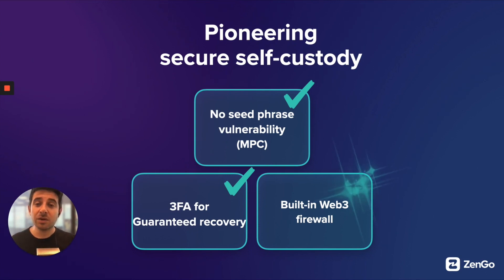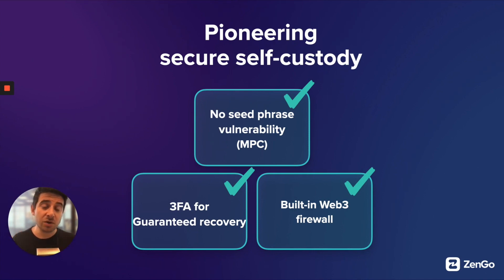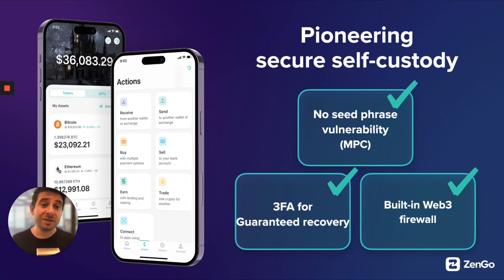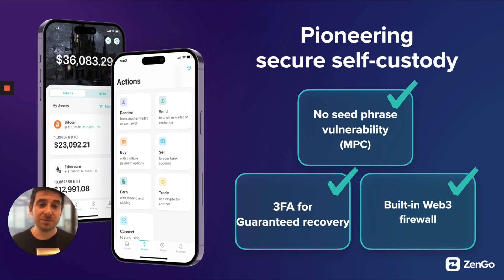When we look at all three together, we see the full pyramid of secure self-custody: no seed phrase vulnerability because of MPC; three-factor authentication to recover your assets if your phone gets lost or stolen; and transactional security on a daily basis with a built-in Web3 firewall. That is the Zengo model — something that is secure by default. We hope this was helpful in learning about our security infrastructure. If you have questions, go to zengo.com/security. We also have live 24/7 in-app support — after downloading Zengo, tap the headset icon in the top right of the screen and we'll respond within minutes. Thank you so much, and feel free to share any questions in the comments.